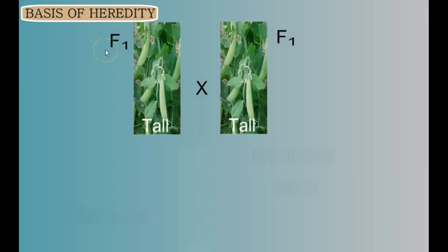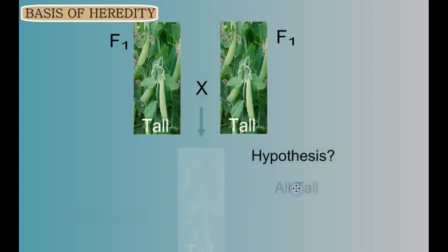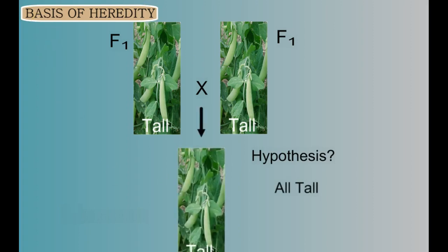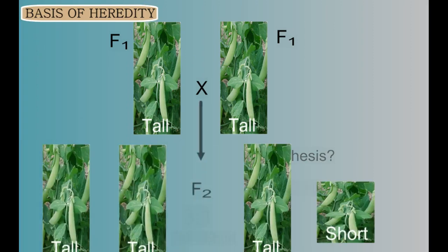Remember, both of these plants are tall, and previously when we crossed tall with tall we only produced tall, and when we crossed tall with short we only produced tall. So again crossing two tall plants, we would logically hypothesize all tall — however, this is not what happened. From this cross of two hybrid tall plants, we produced both tall and short plants. The shortness factor hadn't gone away; it had just been hidden.